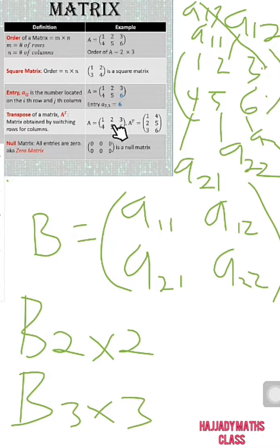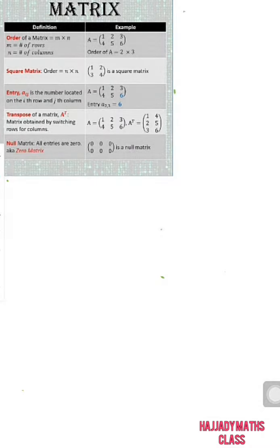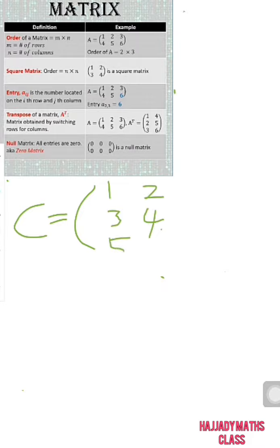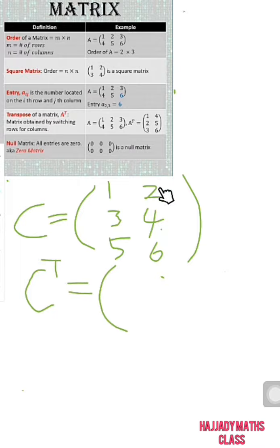There is also what we call the transpose of a matrix. A transpose is when you switch rows into columns. For example, we have matrix C with values 1, 2, 3, 4, 5, 6 — these are the rows and these are our columns. Now we want to transpose this. Transposing matrix C means each row is transformed into a column. So we have: first row becomes first column giving 1, 2; second row becomes second column giving 3, 4; and the last row becomes the third column giving 5, 6.